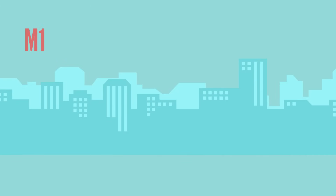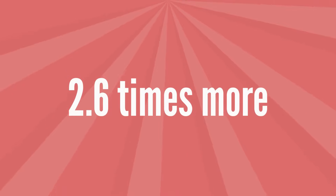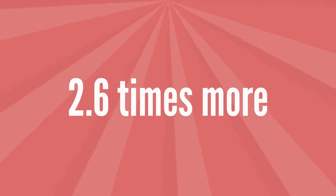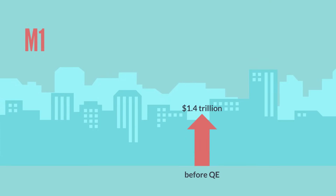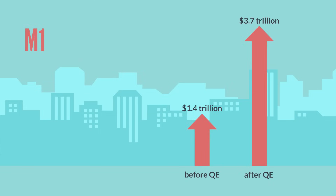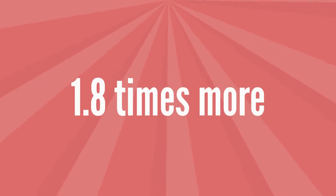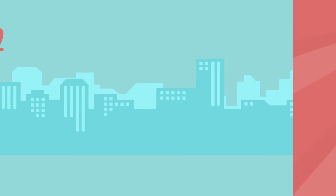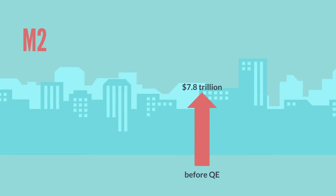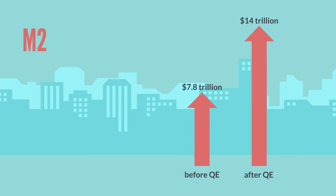By comparison, the M1 money stock only went up roughly 2.6 times, from approximately $1.4 trillion in August of 2008 to $3.7 trillion today. In August of 2014, when the monetary base peaked, it was barely at $2.8 trillion. The M2 money stock went up only 1.8 times, from $7.8 trillion in August of 2008 to $14 trillion today, and in August of 2014 it was at just $11.5 trillion.